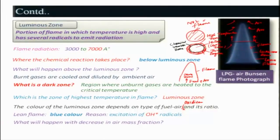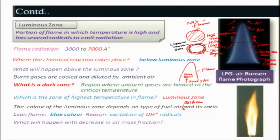Blue color is due to the OH radical, which is more predominant and gives radiation in that band - that is why it is blue in color. When you decrease the mass flow rate of air for a fixed fuel flow rate, it becomes fuel rich. If you are decreasing the air mass flow rate, naturally it will be fuel rich, and if it is fuel rich you will get a yellow color flame. That is due to the excitation of C2* molecules. Having said this, what is interesting to look at is the structure of a one-dimensional flame.